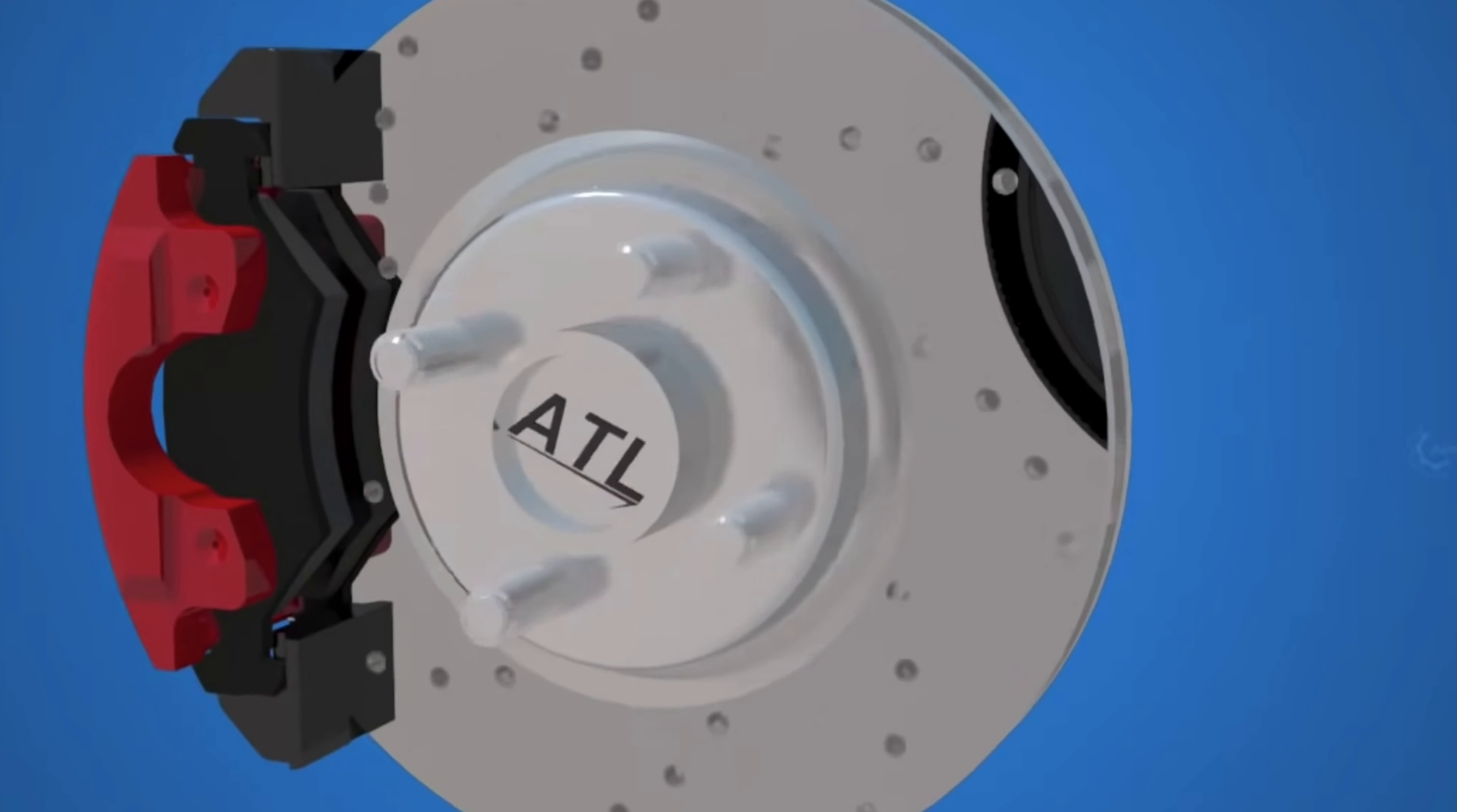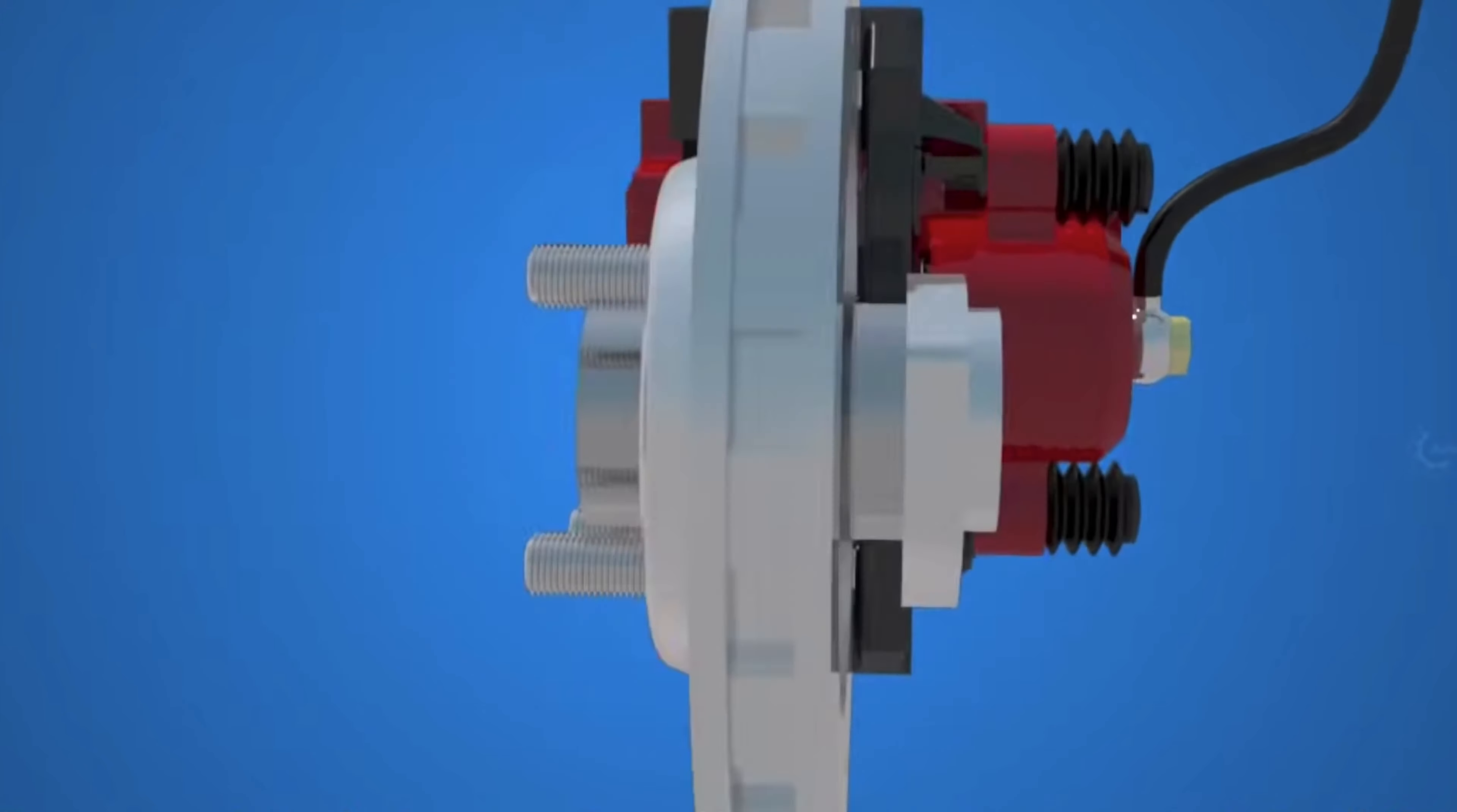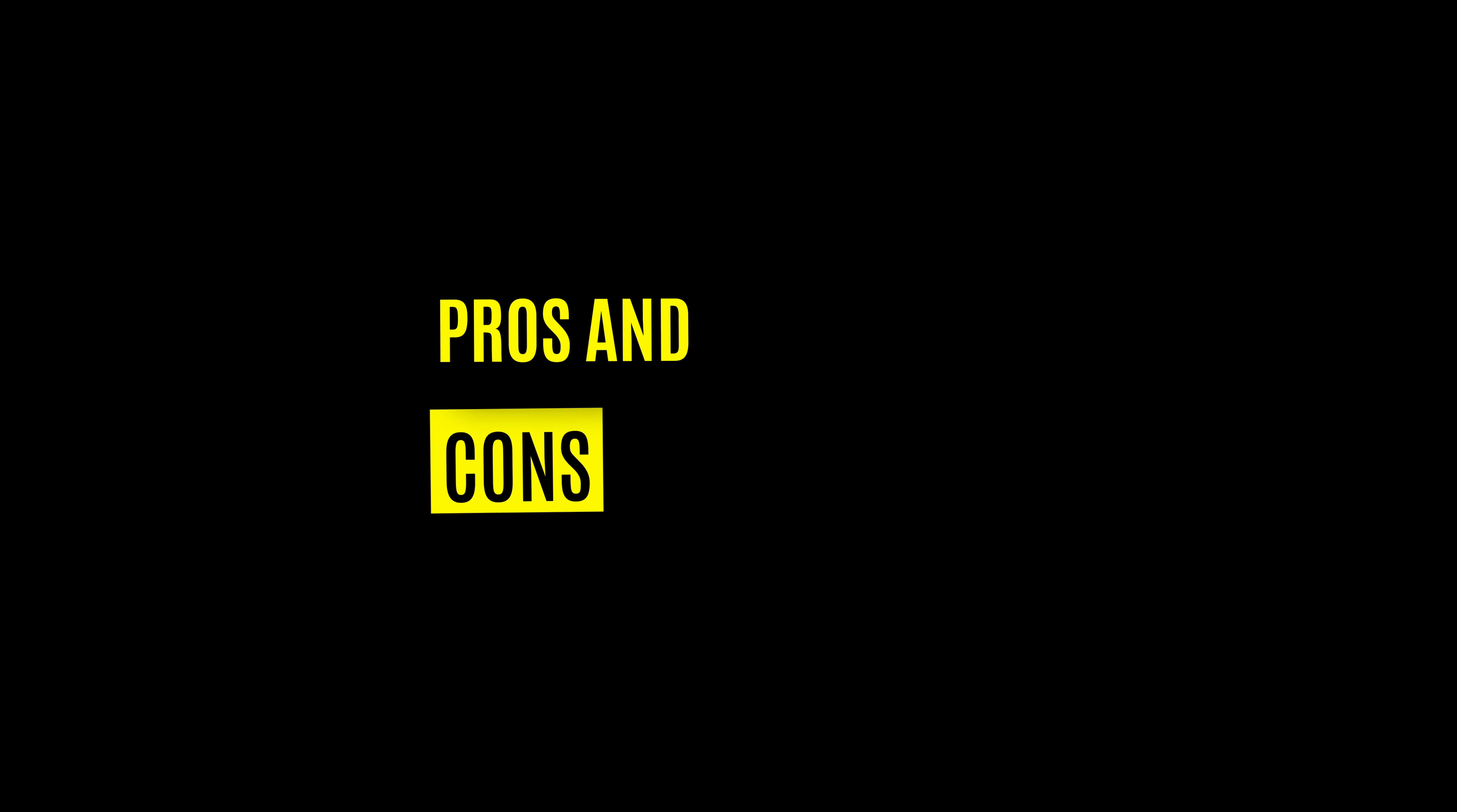In this sense, drum brakes are analogous to the radial flux machine, but we know the disc brakes make better use of the available space to slow down the car.